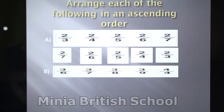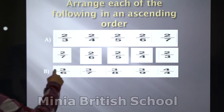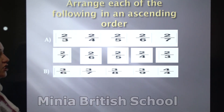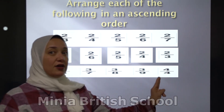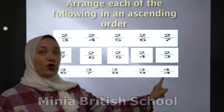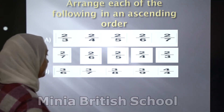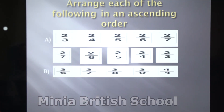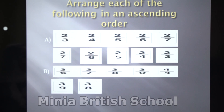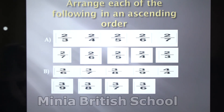Letter B: you have 3 over 6, 3 over 7, 3 over 8, 3 over 9, and 4 over 4. All the numerators are the same, but here you have 4 over 4 — don't forget, 4 over 4 equals 1; it's a whole number. Which one is the smallest? Yes, it's 3 over 9, after that 3 over 8, then 3 over 7, then 3 over 6, and the largest one is 4 over 4.